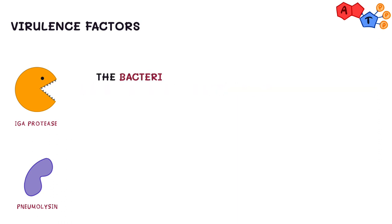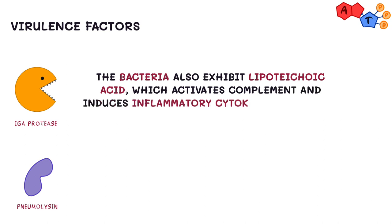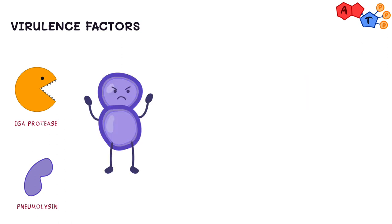The bacteria also exhibits lipoteichoic acid, which activates complement and induces inflammatory cytokine production. This can contribute to the inflammatory response and septic shock syndrome that occurs in some immunocompromised patients. And last but not least is the capsular polysaccharide that resists phagocytosis and favors the invasiveness of the organism.